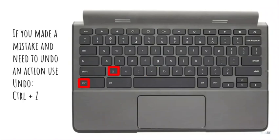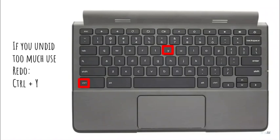Now, if you make a mistake and need to undo something, you can press CTRL-Z, and sometimes you may need to undo several things — you can just keep pressing that and it will keep undoing. Now, if you go a little bit too far, you can use CTRL-Y to put something back that you just undid.